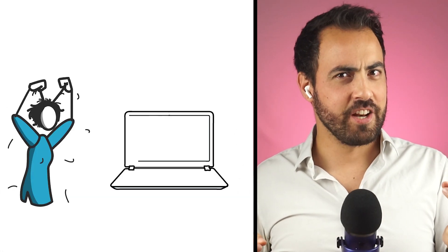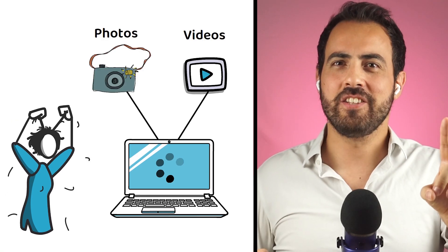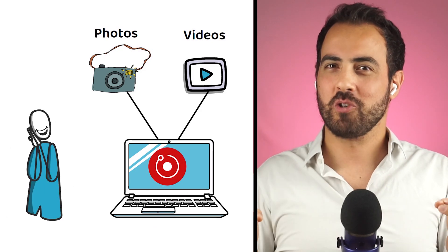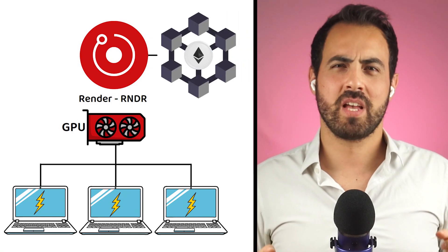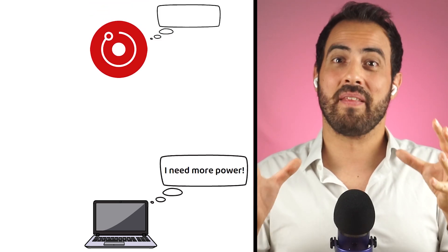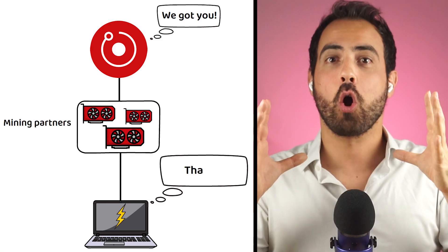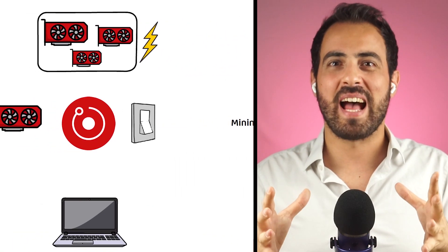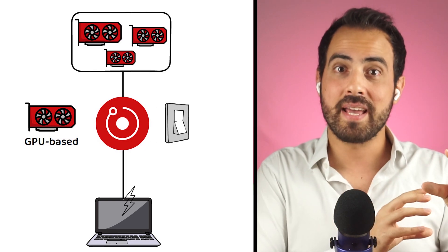Have you ever found yourself frustrated by your computer's struggle to handle heavy tasks like editing photos or videos? Meet Render, your game-changing solution for processing the most demanding tasks seamlessly. Render, also known by the market ticker RNDR, is a distributed GPU rendering service that lives on the Ethereum blockchain. If you need additional GPU rendering power for a project, Render aims to be the platform that helps by connecting you to their GPU mining partners. You can think of Render as a GPU-based power-on-demand service, with Render being the intermediary between buyer and supplier.